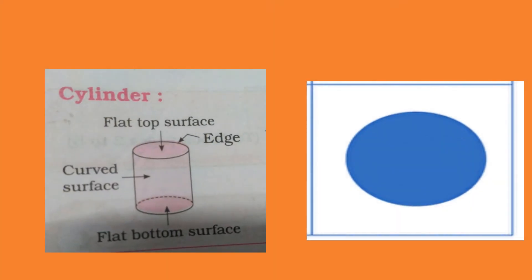The next is cylinder. A cylinder has 2 edges. It does not have any corners. It has 2 flat surfaces, top and bottom, and one curved surface.